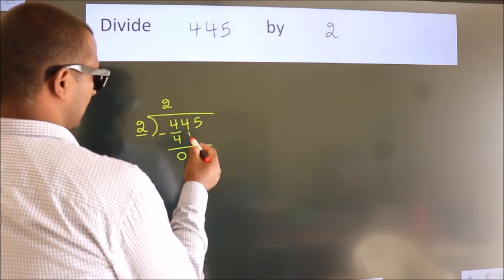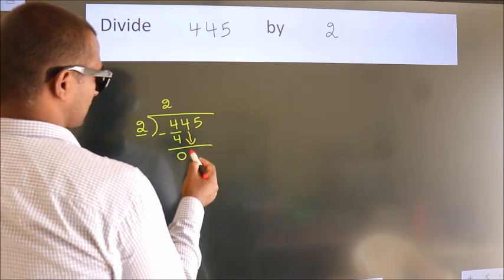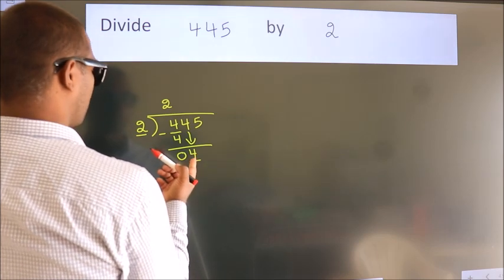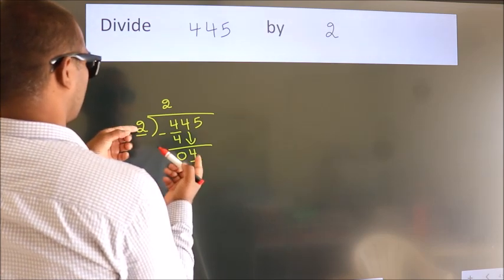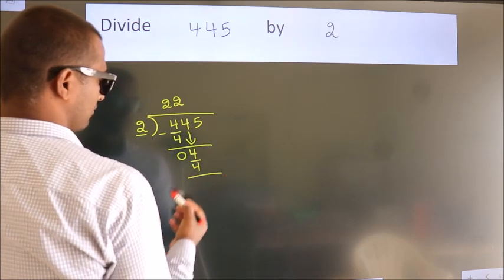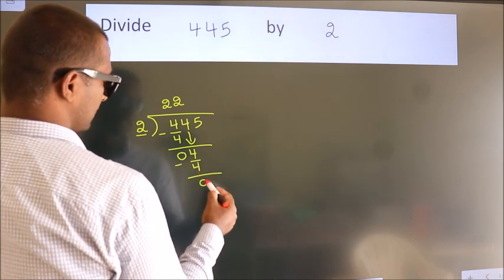After this, bring down the beside number, so 4 down. When do we get 4? In 2 table, 2 twos, 4. Now we subtract, we get 0.